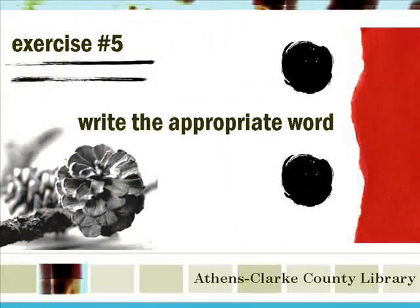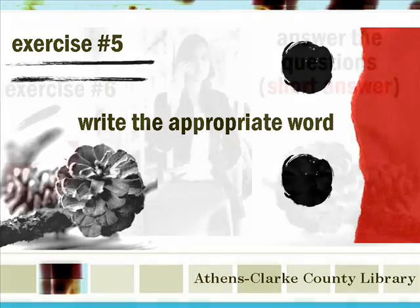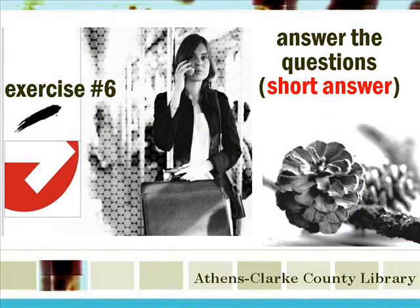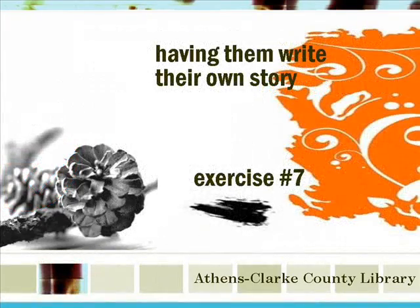Exercise number five is having them write the appropriate word, which is going to be a little harder for most people, but just stick with them. Exercise number six is having them answer some short answer questions explaining why or why not, again using the vocabulary that they've learned. And exercise number seven, the final exercise, is having them write their own story as it relates to the story that they've just learned.